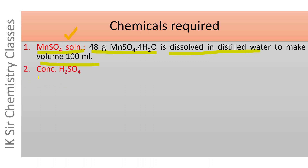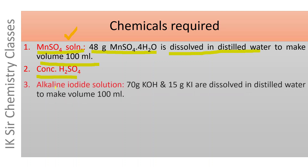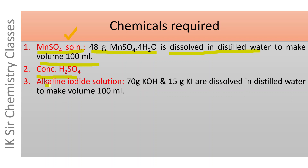The second chemical required is concentrated H₂SO₄. The third one is alkaline iodide solution. For its preparation, 70 grams KOH and 15 grams KI are dissolved in distilled water to make the volume 100 ml.